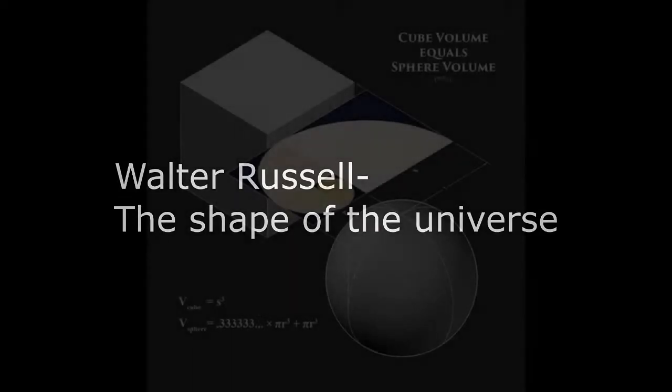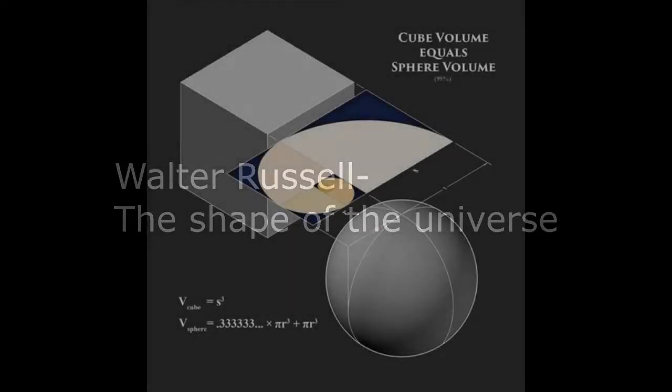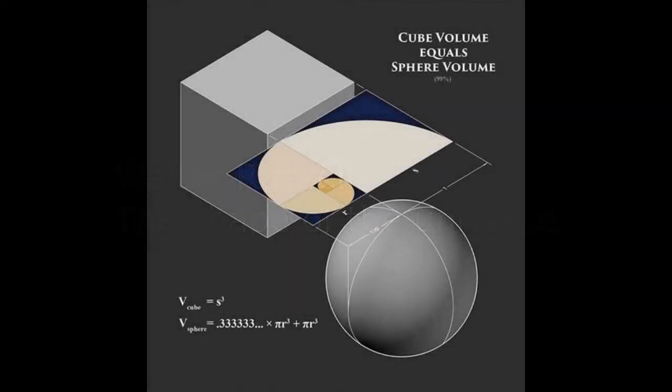Walter Russell's The Secret of Light — I'll be reading from the last chapter in the book. It's pretty difficult to understand without visuals, and some of the visuals really need to be explained. Just listen to this video at least twice and it should start to make more sense. This is the chapter called 'The Shape of the Universe.'